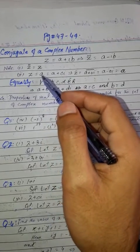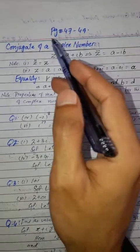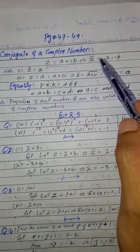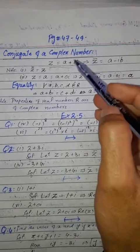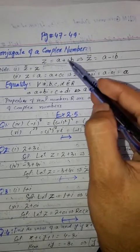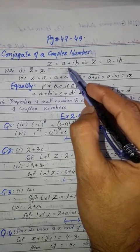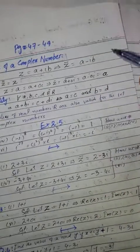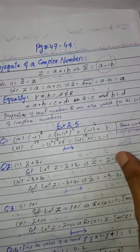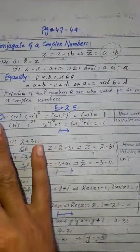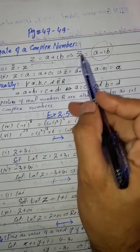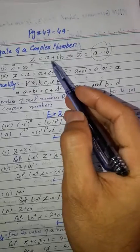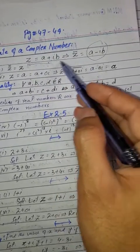Now the next concept: the conjugate of a complex number. Simply, if you have a complex number A plus B iota, the conjugate is formed by changing the sign of the iota term. So the conjugate becomes A minus B iota. This is represented as Z bar, read as Z bar.